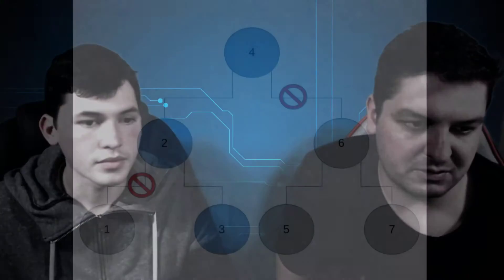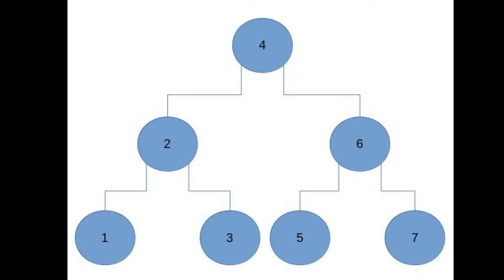Since it might be a bit hard to picture, there's an image ready. There we go — so you can see here you have the four in the root. We picture trees as an inverted tree, so the root is at the top and the leaves are at the bottom. You have four at the root, then the node with value two to the left, which is less than four, and six as the right child of four because it's greater than four.